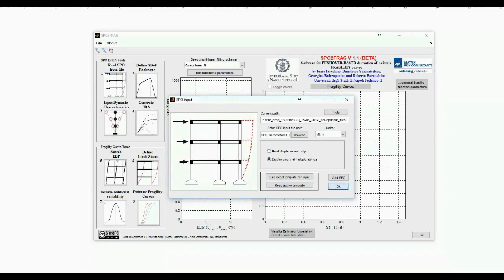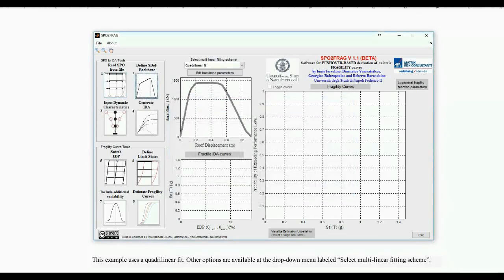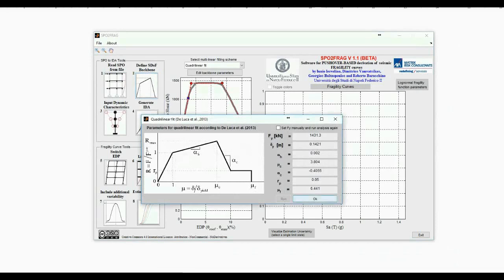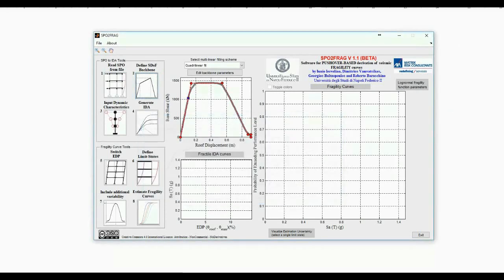Now we press the button labeled Define SDOF Backbone to run the optimization algorithm that provides a piecewise linear solution for the backbone curve of the equivalent single degree of freedom system. When a solution is reached, a window opens showing the backbone parameters.